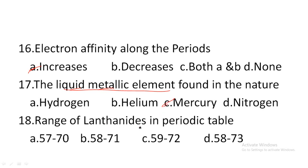Next: range of lanthanoids in the periodic table — option A: 57 to 70, option B: 58 to 71, option C: 59 to 72, option D: 58 to 73. The range of lanthanoids is 58 to 71. Option B is the correct answer.